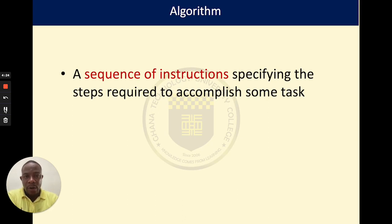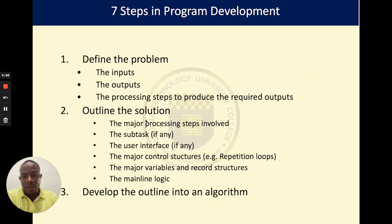To be a successful programmer, you should be able to develop an algorithm for the programs you are going to write. When you are given a problem to write a program for, what do you have to do? There are seven basic steps that you need to follow.